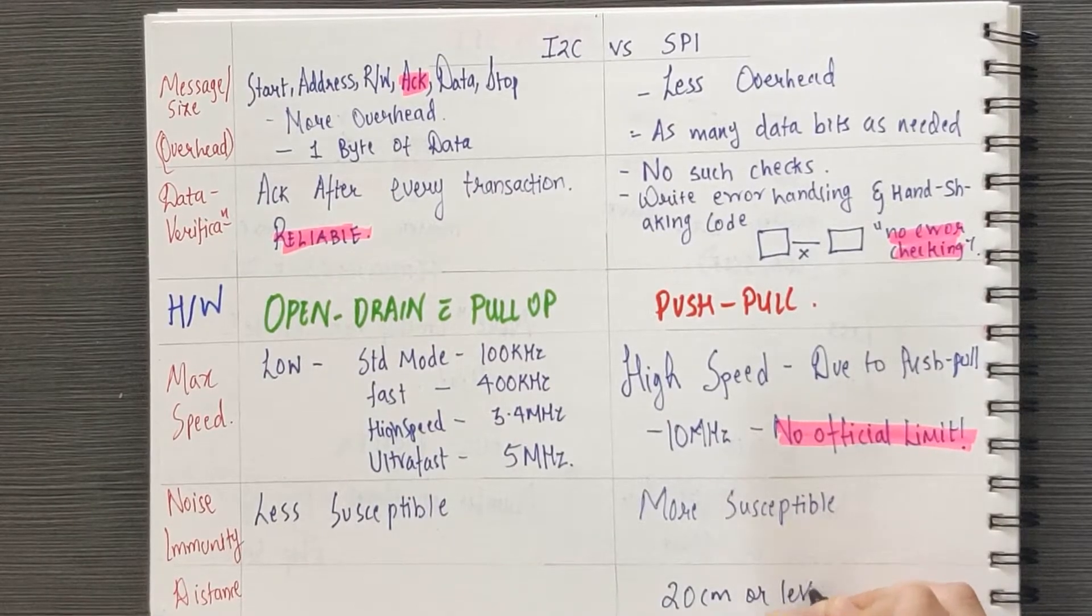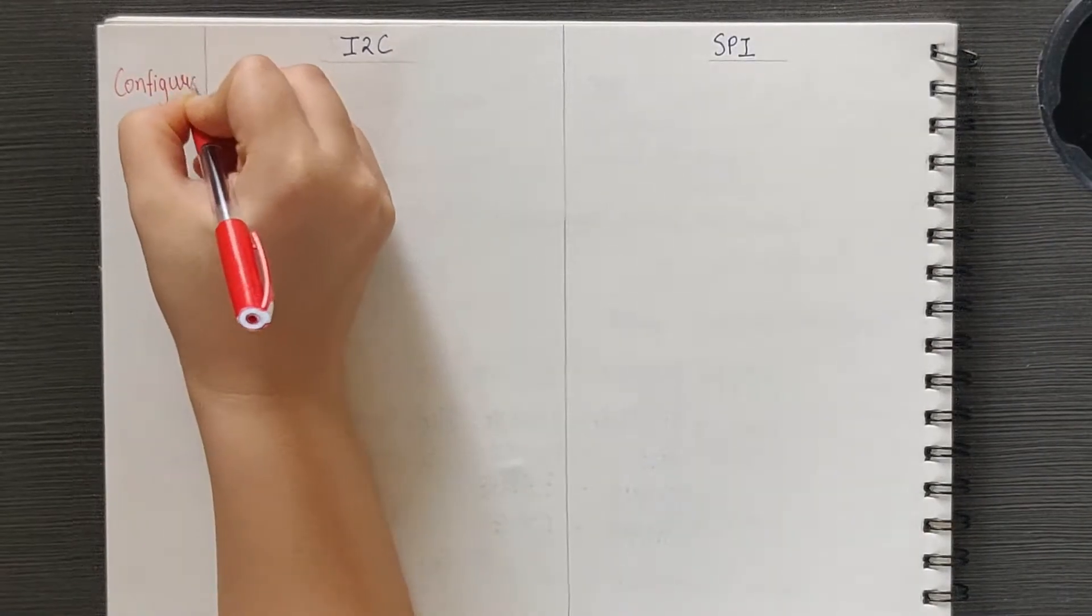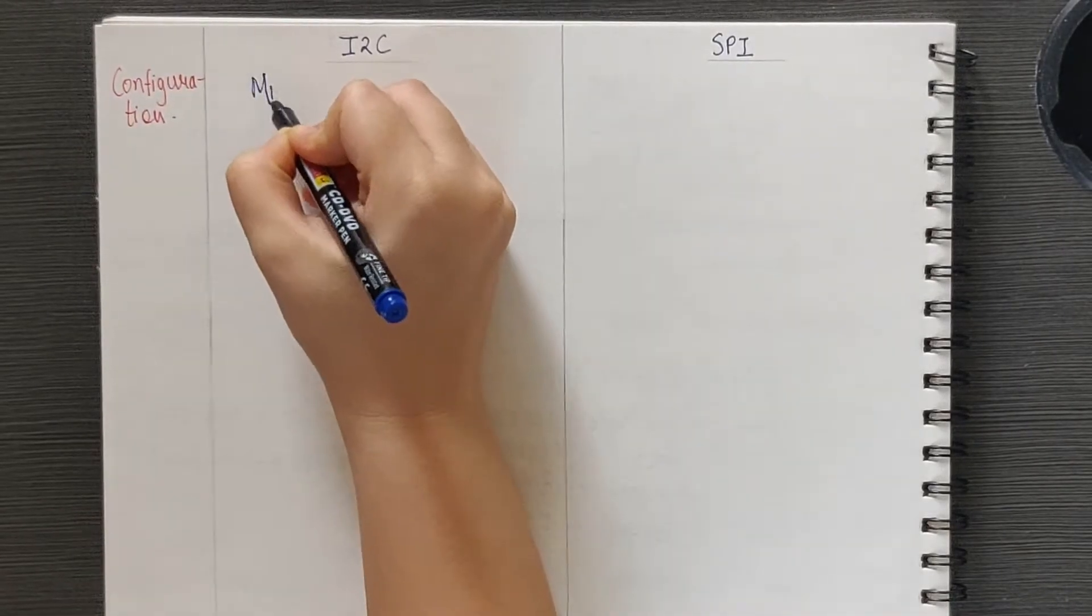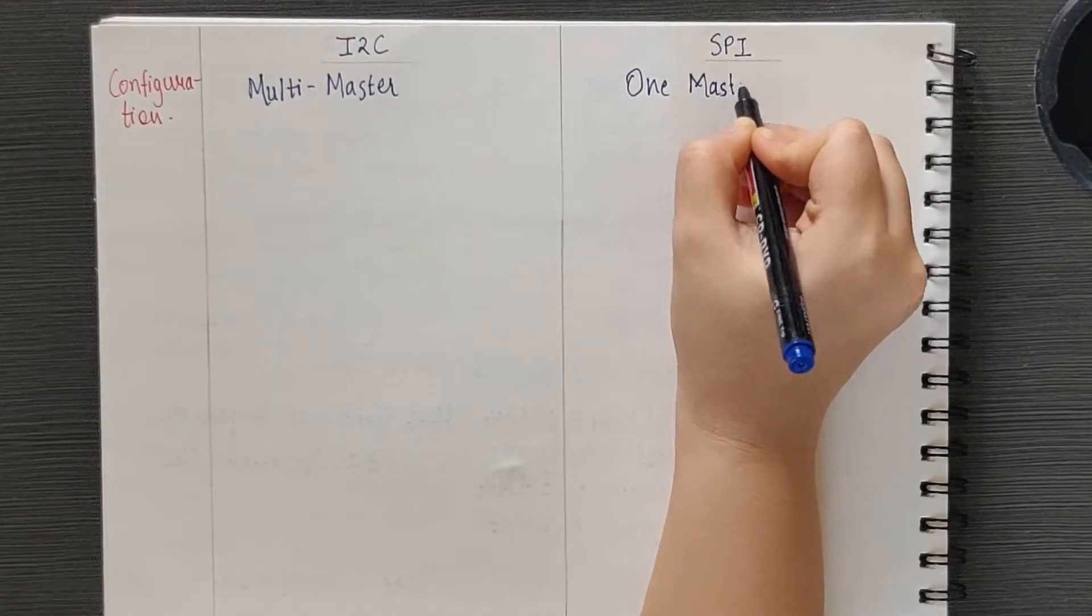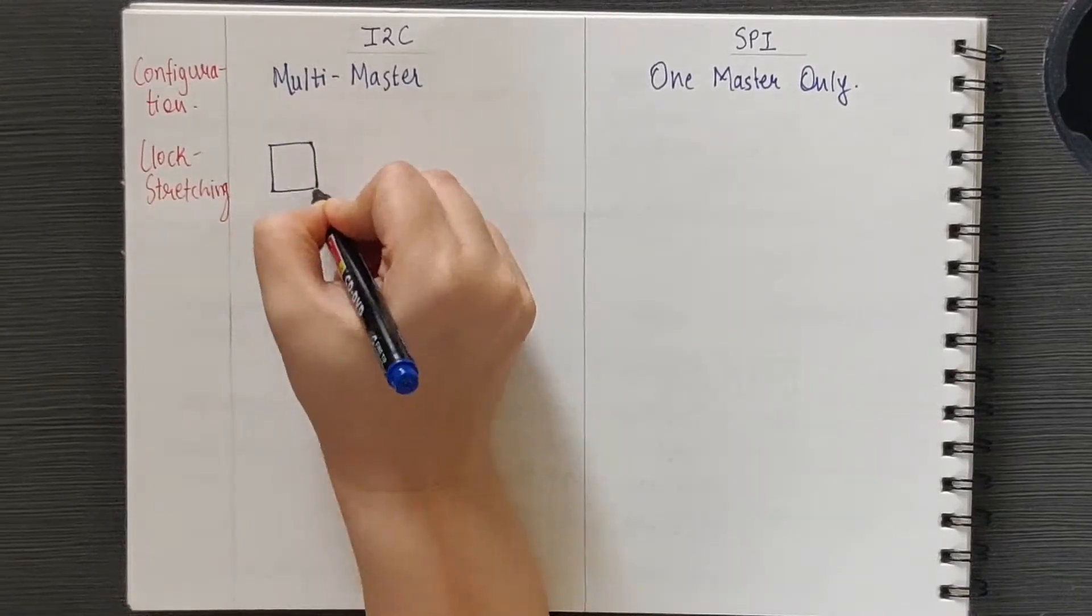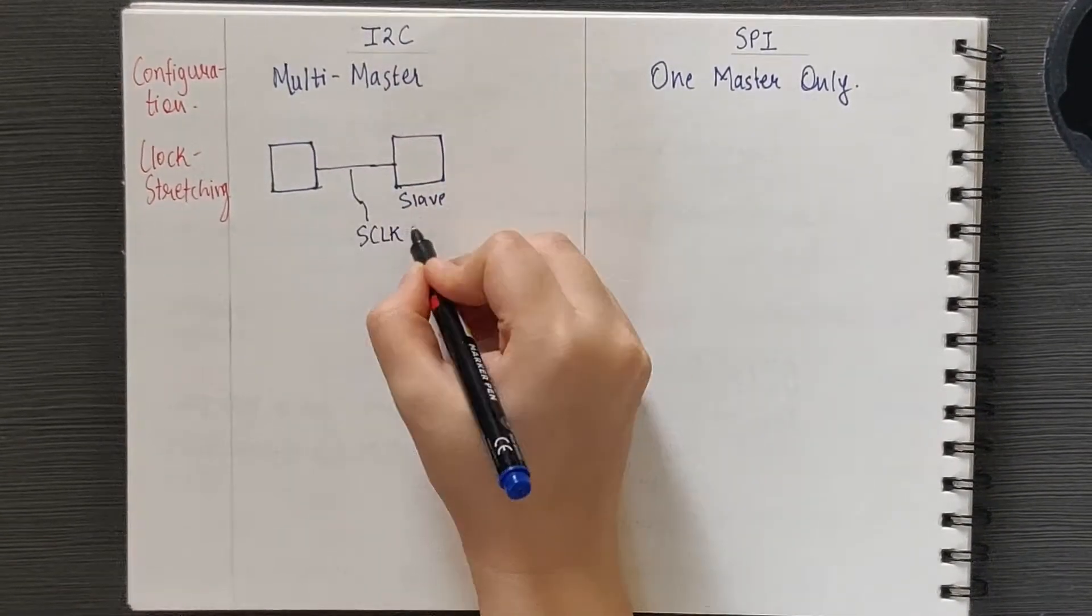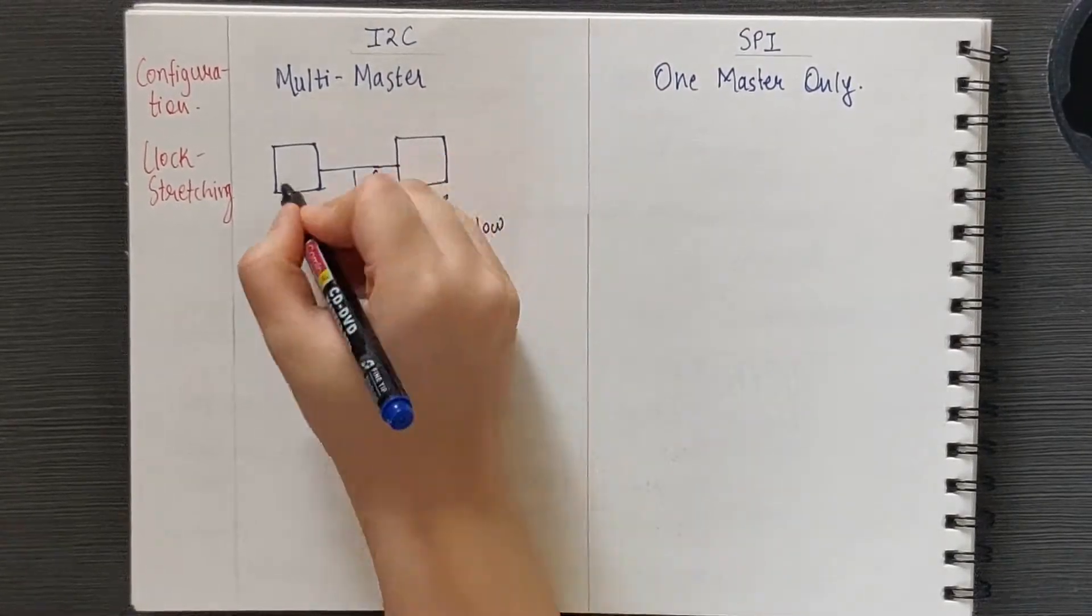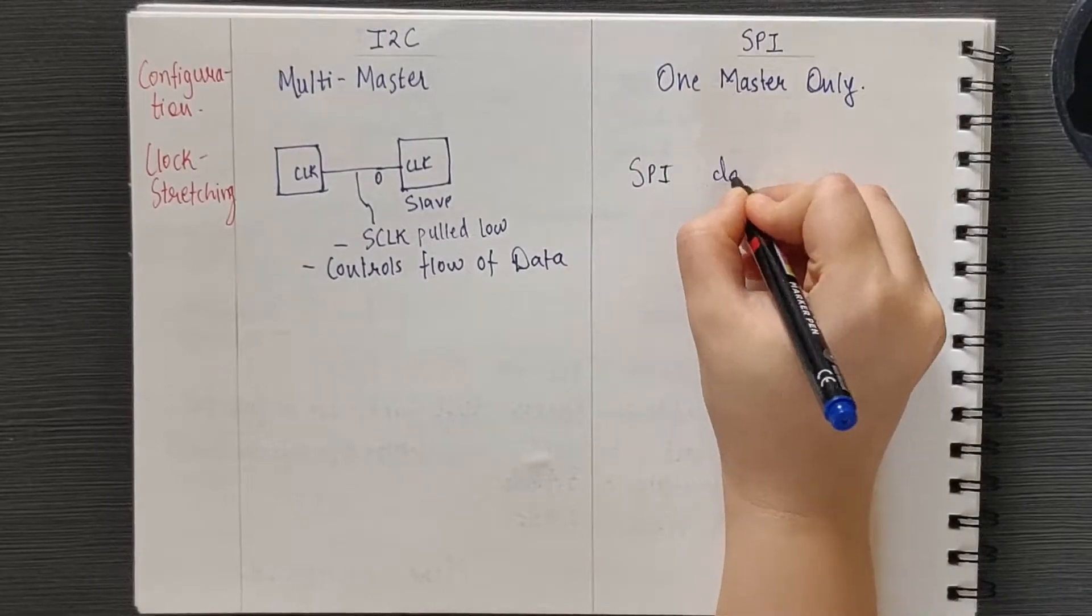Let's come back to the open drain configuration. Due to the open drain configuration, I2C supports multi-master system. SPI-based design can only have one master. Also, clock stretching is another exclusive feature of I2C wherein the slave can stretch the clock or pull the SCL line low. Thus, it can control the flow of data. This is another implication of open drain config. SPI doesn't have that feature.